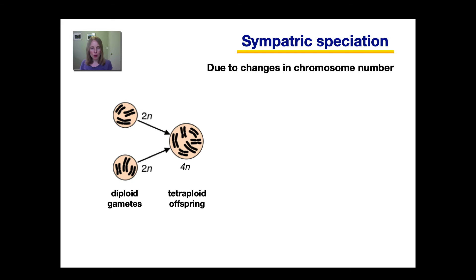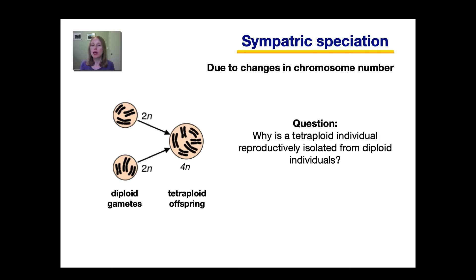Before I move on, I wanted to ask you a question — think about it, write the answer down, and we'll discuss it in class. Based on your knowledge of meiosis, why is a tetraploid individual reproductively isolated from diploid individuals? Why would that tetraploid not be able to successfully mate with someone that's diploid?